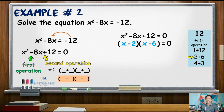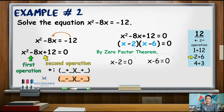By the zero product property, x minus 2 equals 0 and x minus 6 equals 0. Transposing the constants to the right side of both equations, the x values are positive 2 and positive 6.